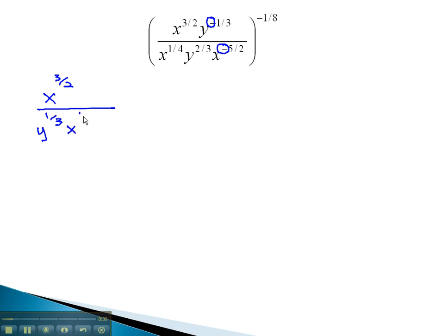In the denominator, we have an x to the 1-fourth, a y to the 2-thirds, and the x to the negative 5-halves must move up to the numerator.